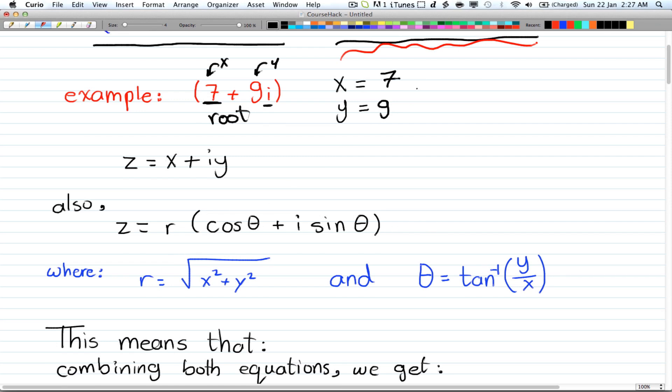And r is the square root of x squared plus y squared. And θ = tan^(-1)(y/x), or tan θ = y/x.